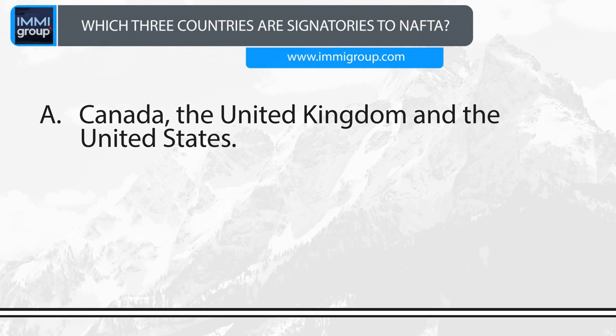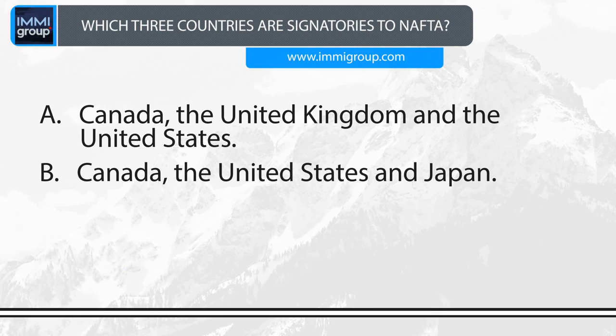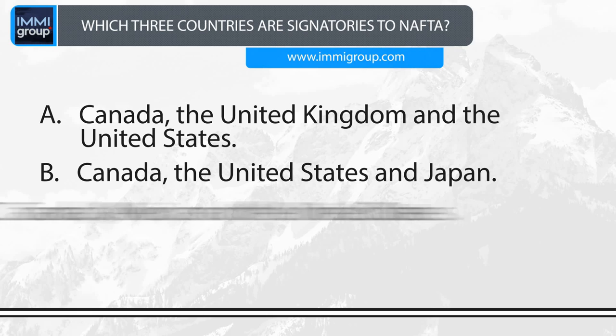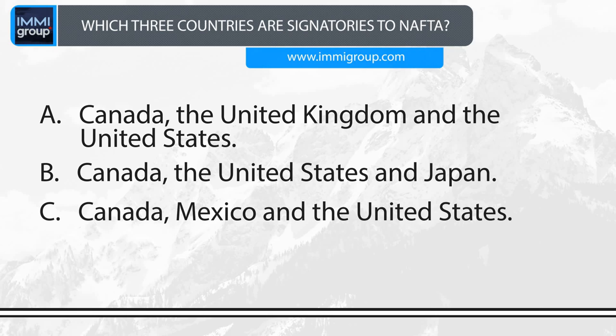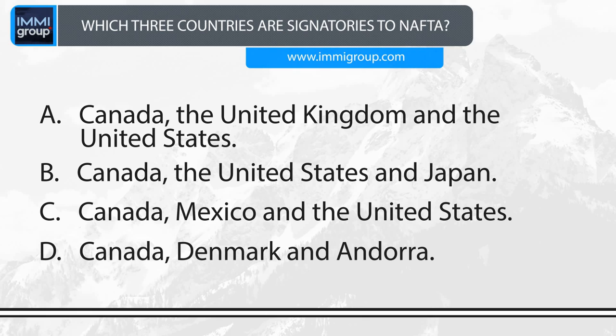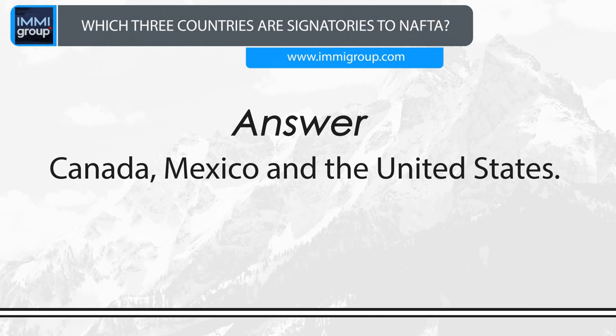Which three countries are signatories to NAFTA? A. Canada, the United Kingdom and the United States. B. Canada, the United States and Japan. C. Canada, Mexico and the United States. D. Canada, Denmark and Andorra. Answer: Canada, Mexico and the United States.